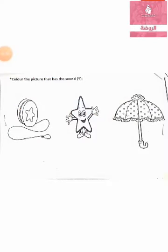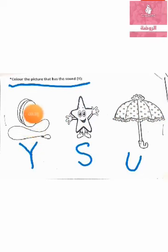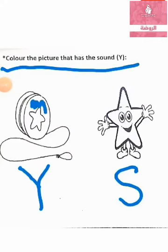Now Keiji, we want to do our homework on the notebooks. Let's do it together. We want to color the picture that has the sound Y. Okay, what's this? Yo-yo. What's this? Star. And what's this? Umbrella. So we will color yo-yo. Excellent Keiji! We will color yo-yo, let's color together.